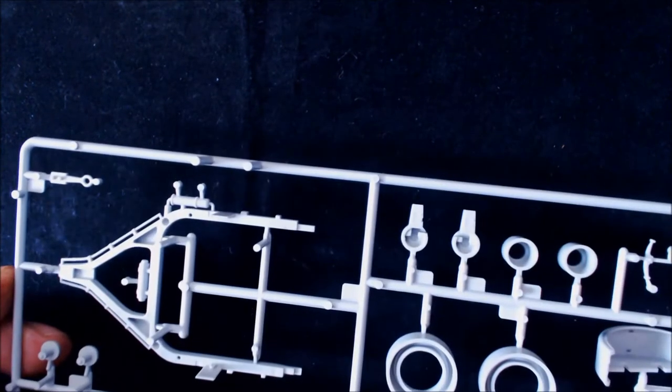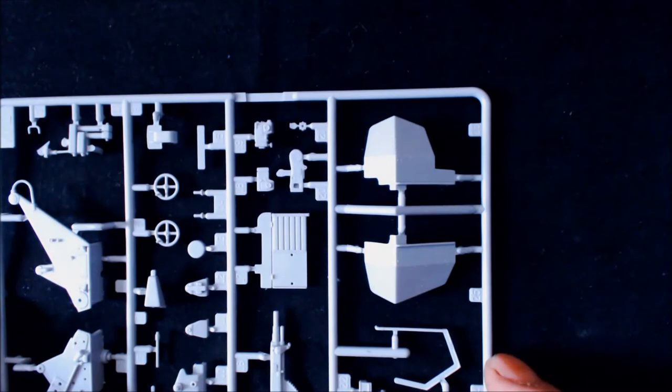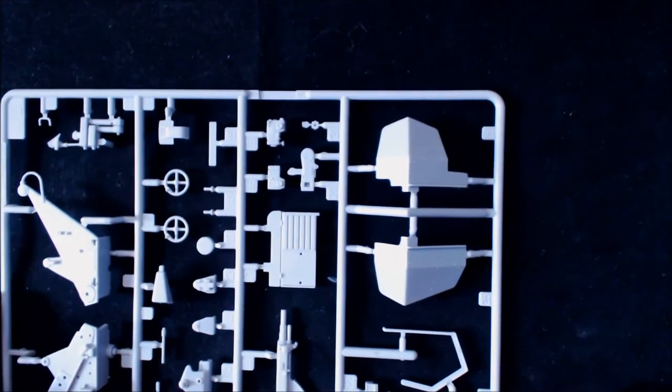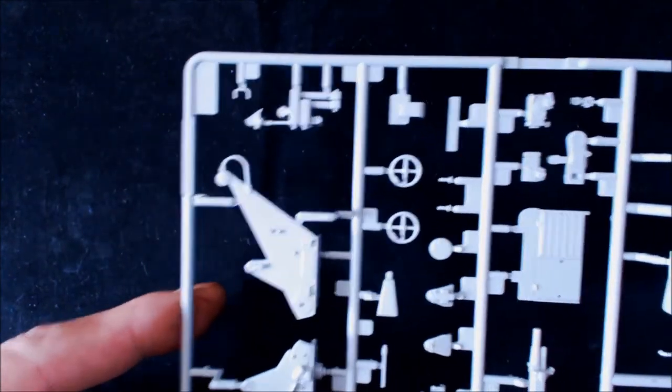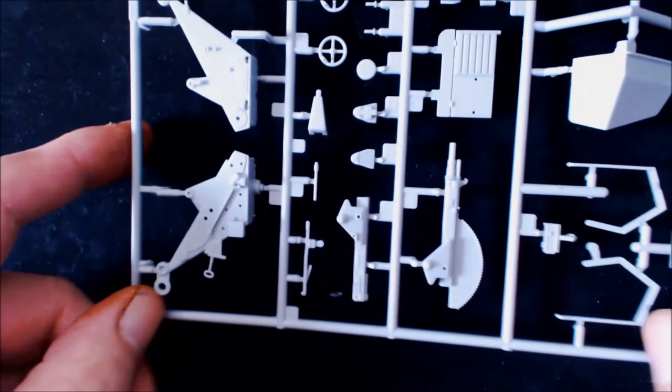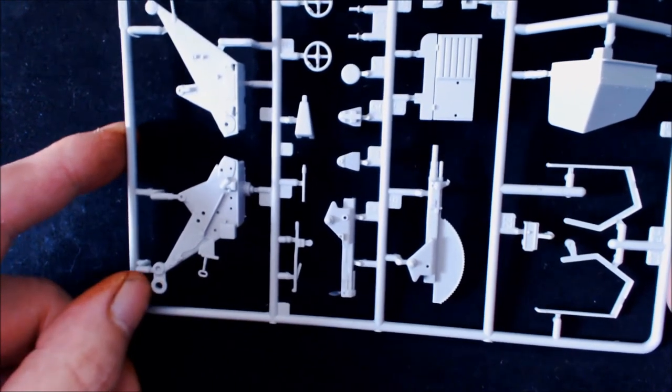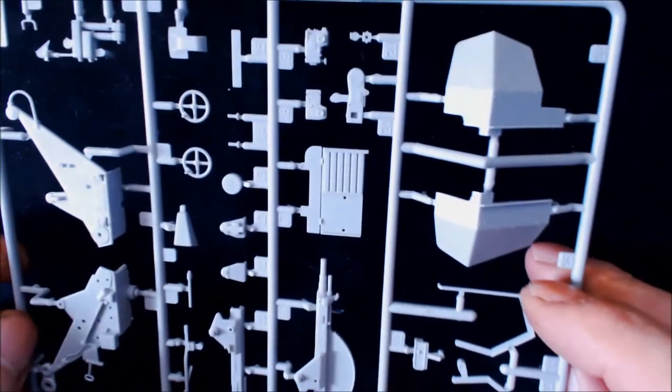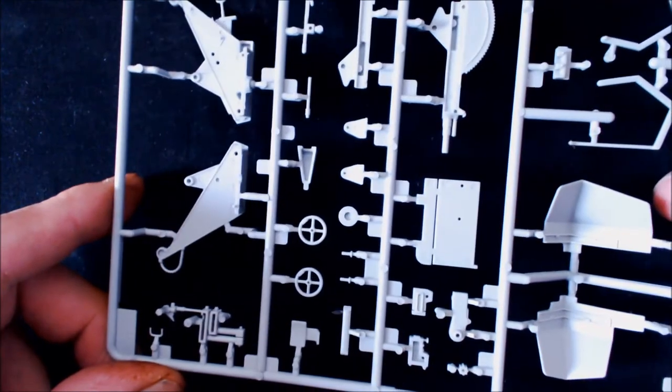The next sprue is WL, and this is mainly the actual gun itself. Now I'm pleased to see that if you're not too good on PE, they've actually given you the gun shield there as well in styrene, so you have got an option. Moving down, we've got a few handles and wheels. We've actually got the side to the actual gun itself, the support brackets. We have the lower half with the elevation, the elevation cog on it. All nice and clean, no flash. What detail is there is nice and crisp.